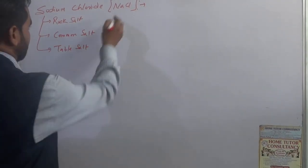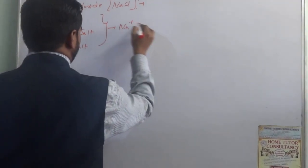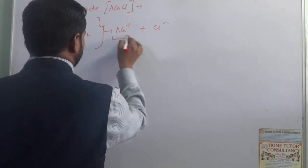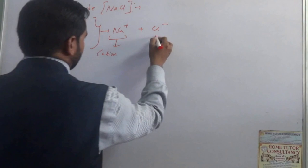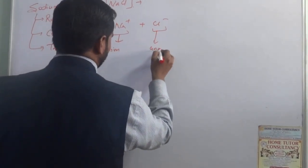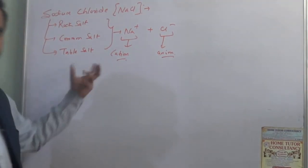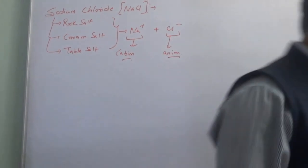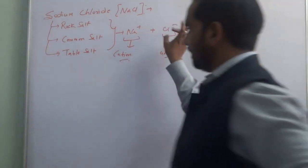Sodium chloride is composed of a sodium ion and a chloride ion. The sodium ion is a cation of sodium and the chloride ion is an anion of chlorine. So NaCl is formed by the combination of these cation and anion of sodium and chlorine.